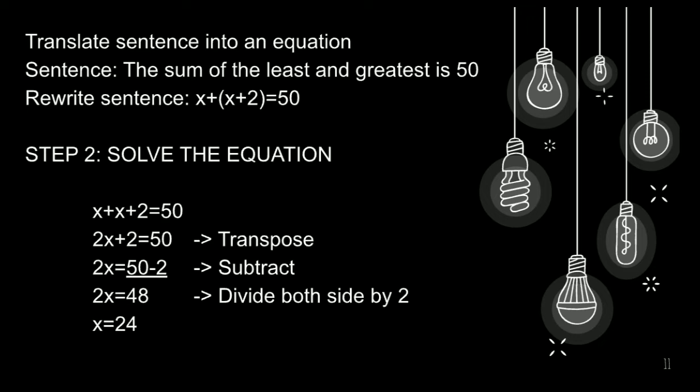Step 2. Solve the equation. So, x+x+2 is equals to 50. So, x plus x is equals to 2x. And bring down lang natin yung 2 and 50. Pagkatapos nito, ay itatranspose natin siya. So, bring down na yung 2x and equals to 50 minus 2. Nagiging negative ito na siya dito since ito ay positive nung nasa una siya. Pagkatapos nito, ay i-subtract natin ang 50 and 2. So, bring down mo yung 2x and 50 minus 2 is 48.